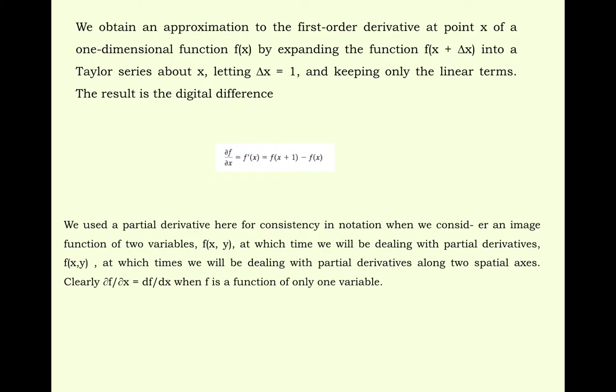We obtain an approximation to the first order derivative at point x of a one-dimensional function f(x) by expanding the function by a small increment Δx, f(x + Δx). According to Taylor series, letting Δx equal to 1 and keeping only the linear terms, the result is: ∂f/∂x = f(x + 1) - f(x). We use the partial derivative here for consistency in notation when we consider an image function of two variables f(x,y) at which we will be dealing with partial derivatives along two spatial axes x and y. Clearly ∂f/∂x = df/dx when f is a function of only one variable.